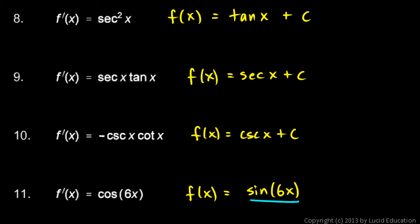Now let's test this. Take the derivative of sine 6x and see if we get that. The derivative of sine 6x is cosine 6x times, by the chain rule, the derivative of 6x, so times 6.